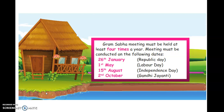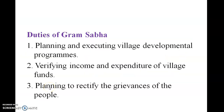Gram Sabha meetings must be held at least four times a year. The meetings must be conducted on the following dates: 26th January — Republic Day; 1st May — Labour Day; 15th August — Independence Day; and 2nd October — Gandhi Jayanti.